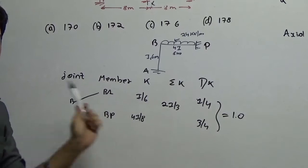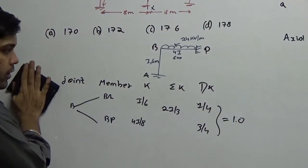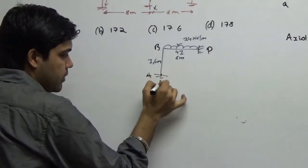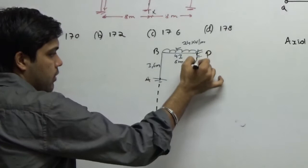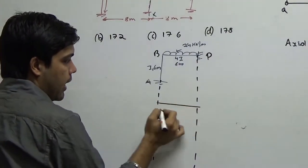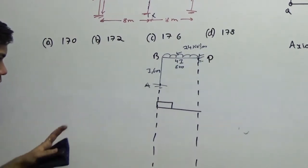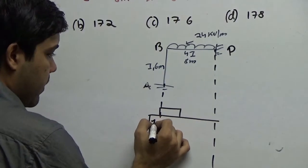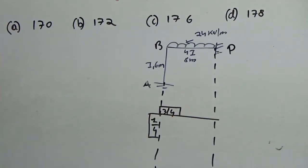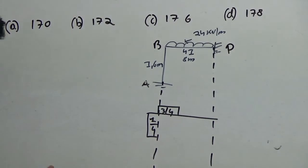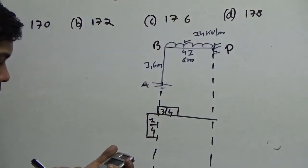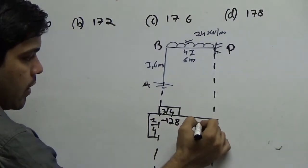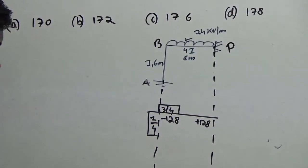After finding out this, the next thing I am doing is trying to directly calculate the moments now. In moment distribution I always try to expand this like this. I will write the distribution factors here. What was the distribution factor for BA? It was 1 by 4 here. So I will write 1 by 4 here and 3 by 4 here. Now what is the fixed end moment here? 24 into L square by 12, WL square by 12, minus 128 here plus 128 here.